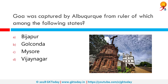Goa was captured by Albuquerque from the ruler of which among the following states? Alfonso de Albuquerque was the second governor of Portuguese India and is known as the founder of the Portuguese colonial empire in India. In 1510, Albuquerque acquired Goa from Bijapur.